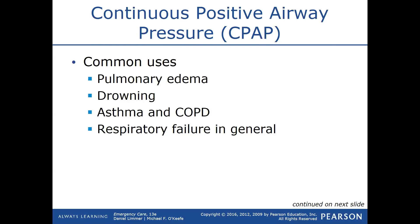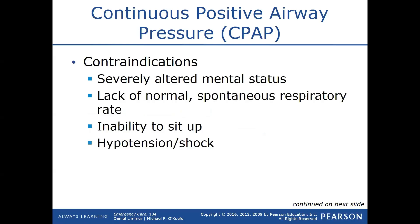Contraindications for CPAP: severely mentally altered patients cannot use it because they need to be breathing on their own spontaneously. Lack of normal spontaneous respiration, inability to sit up, hypotension, and shock are also contraindications. If your patient is mostly normal — not mentally altered, able to sit up — but is having difficulty breathing, you can put a CPAP on them.